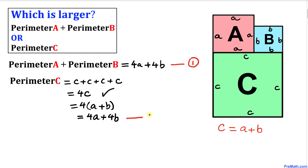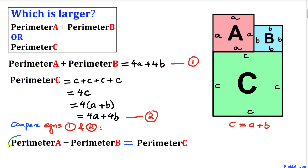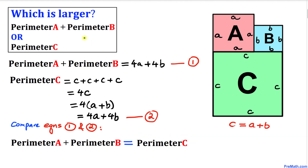Now let's compare Equations 1 and 2. We can see that the right-hand side is the same — both equal 4a plus 4b. Therefore we conclude that perimeter A plus perimeter B is equal to perimeter C. So they are equal! Keep that in mind. Thanks for watching, and please don't forget to subscribe to my channel for more exciting videos. Bye!